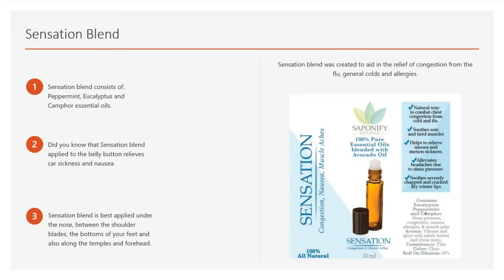The next one is Sensation. This is one of the very first blends I ever made. The Sensation blend was created to relieve congestion from the flu, general colds, allergies, and basic arthritis and general pain. It also does a really good job with nausea and other issues. The Sensation blend consists of peppermint, eucalyptus, and camphor. Those three oils all have unique qualities — peppermint has menthol, eucalyptus also has menthol, and camphor oil also has a phenomenal menthol quality to it.